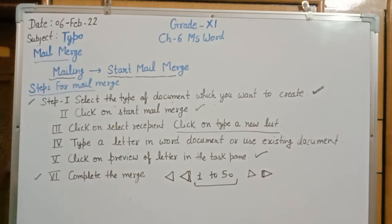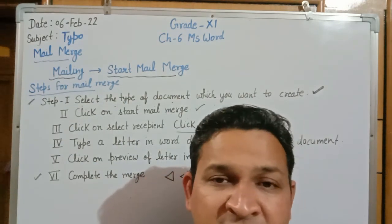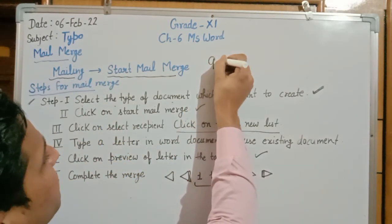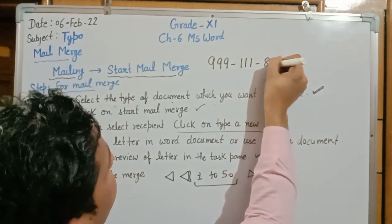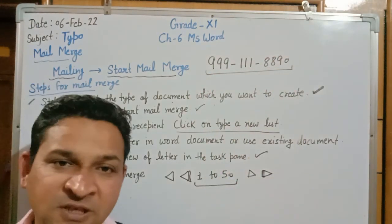After completing this topic, we have covered all the concepts of MS Word. The rest of the chapter is a summary of what we have studied. Chapter 6 Part B is now complete — nothing is left. We will meet in the next video with Part A, Chapter 5. If you have any doubts, you can send a WhatsApp message to my number: 999-111-8890. Thank you, have a nice day.